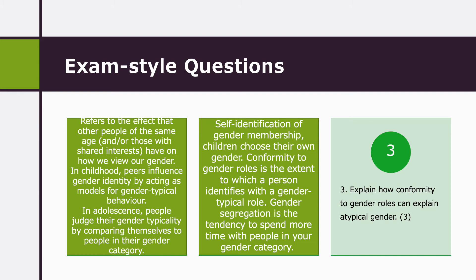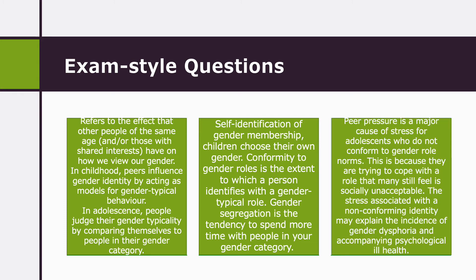Question three was: explain how conformity to gender roles can explain atypical gender. This is specifically in adolescence. Peer pressure is a major cause of stress for adolescents who do not conform to gender role norms, because they are trying to cope with a role that many still feel is socially unacceptable. The stress associated with a non-conforming identity may explain the incidence of gender dysphoria and accompanying psychological ill health.